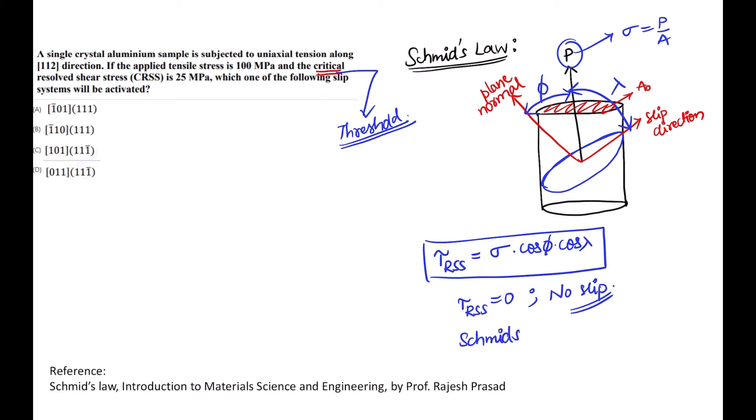So we call it a Schmid's factor, represented by m, which is equal to cos phi into cos lambda. You can see if m equal to zero, there won't be any slip, that means it will lead to a brittle fracture.